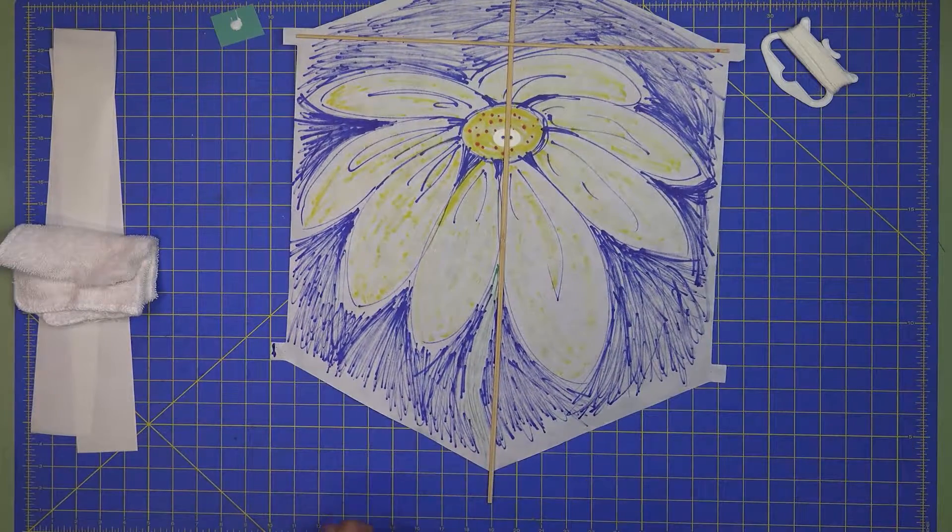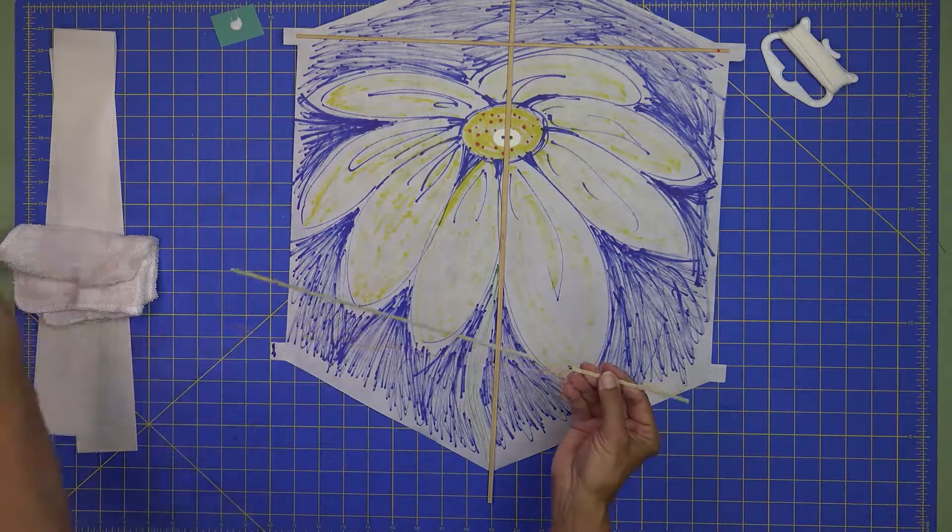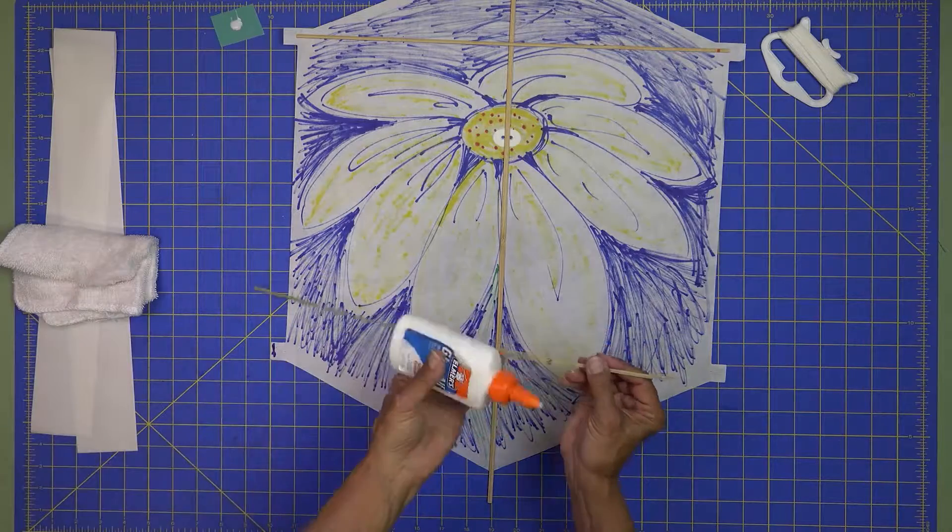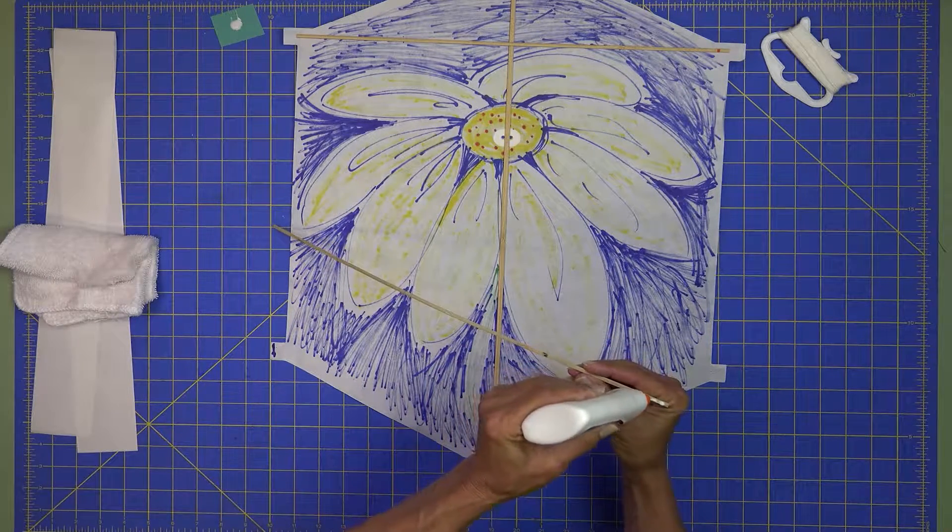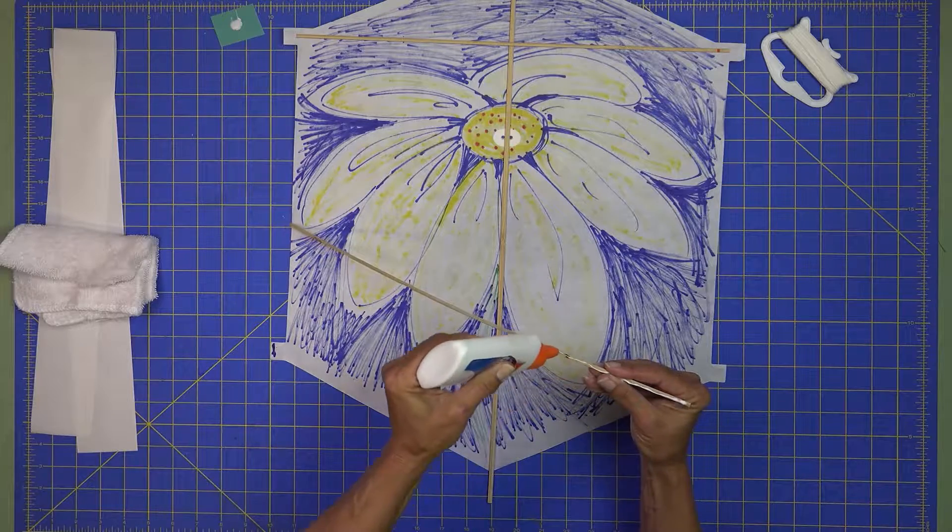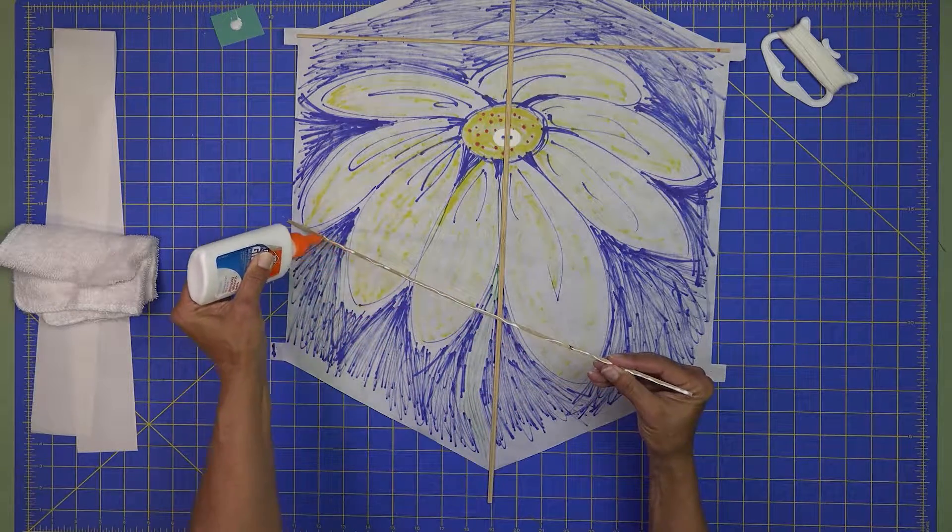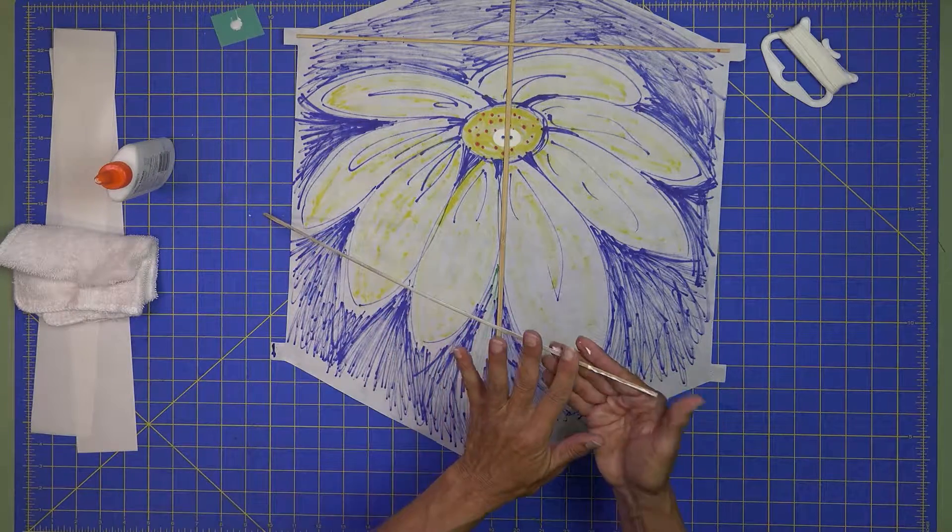You'll notice this actually has a little bit more bow, or as the kite flyers say, dihedral. And we're just going to run right down the stick. And then even that glue out with your finger.